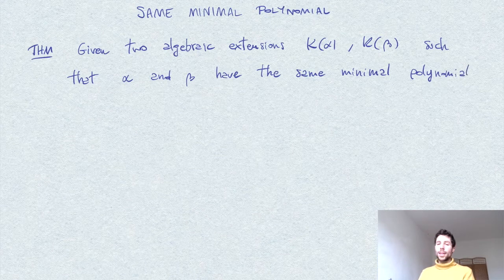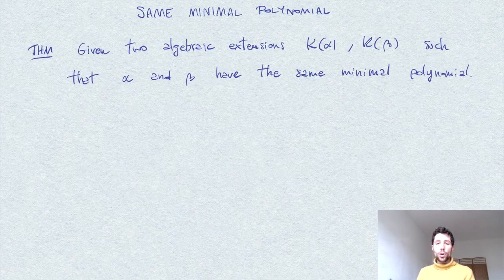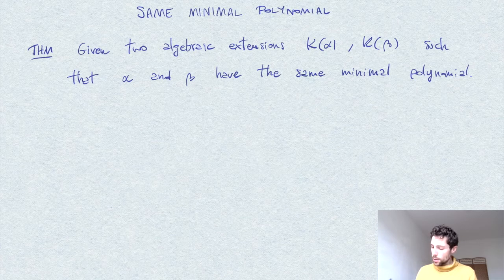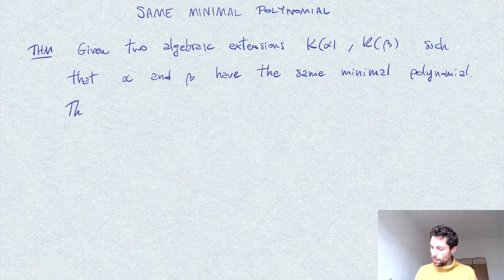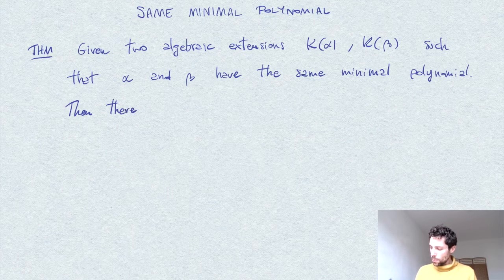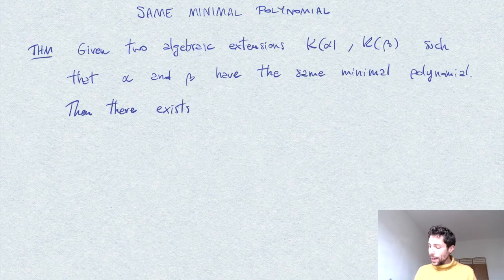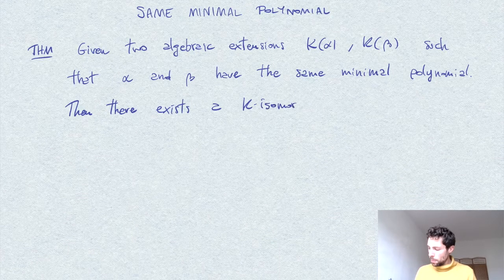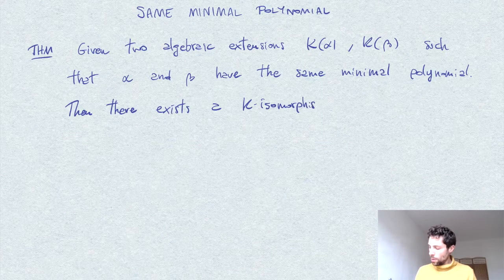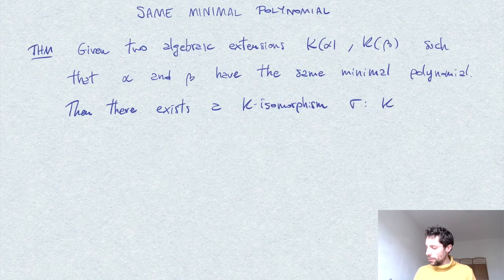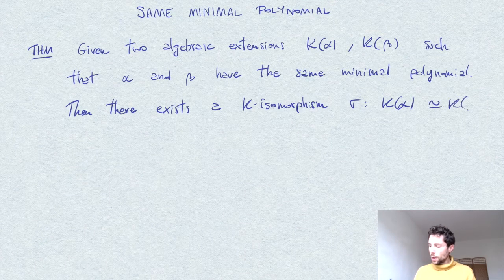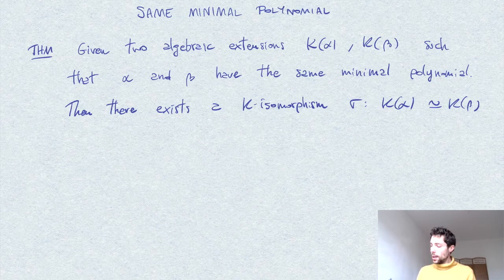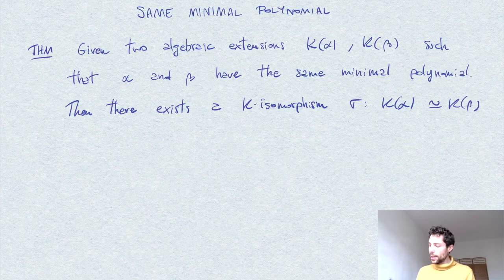If these two elements have the same minimum polynomial, then there exists a K-isomorphism σ from K(α) to K(β). Recall that a K-isomorphism is an isomorphism of fields which is K-linear, so restricted to the field K it is the identity.